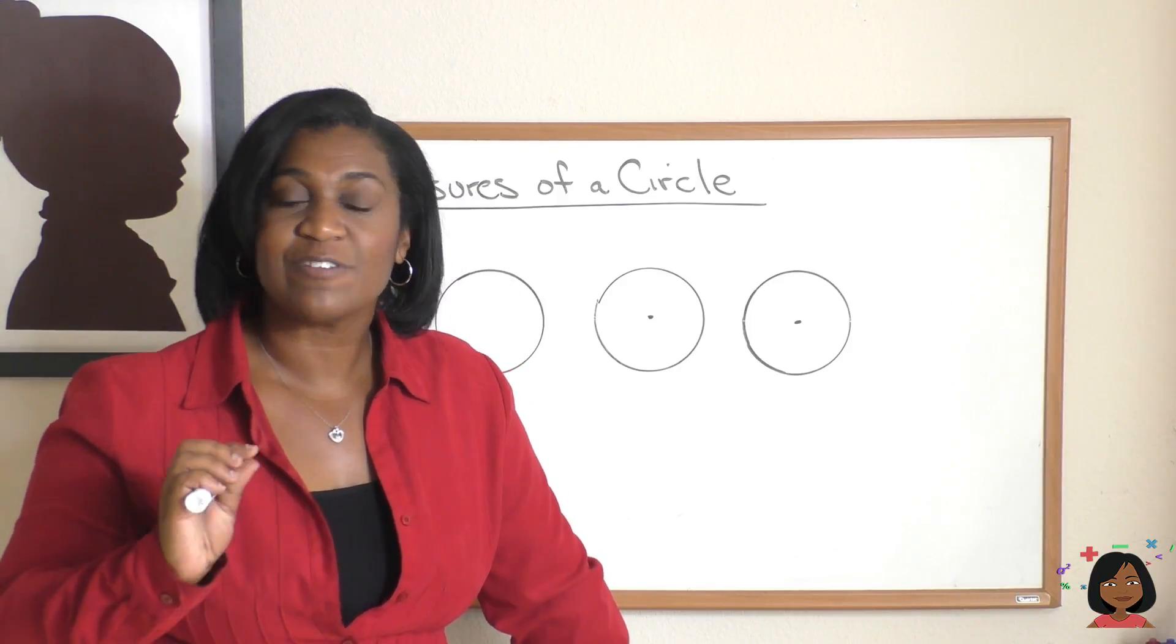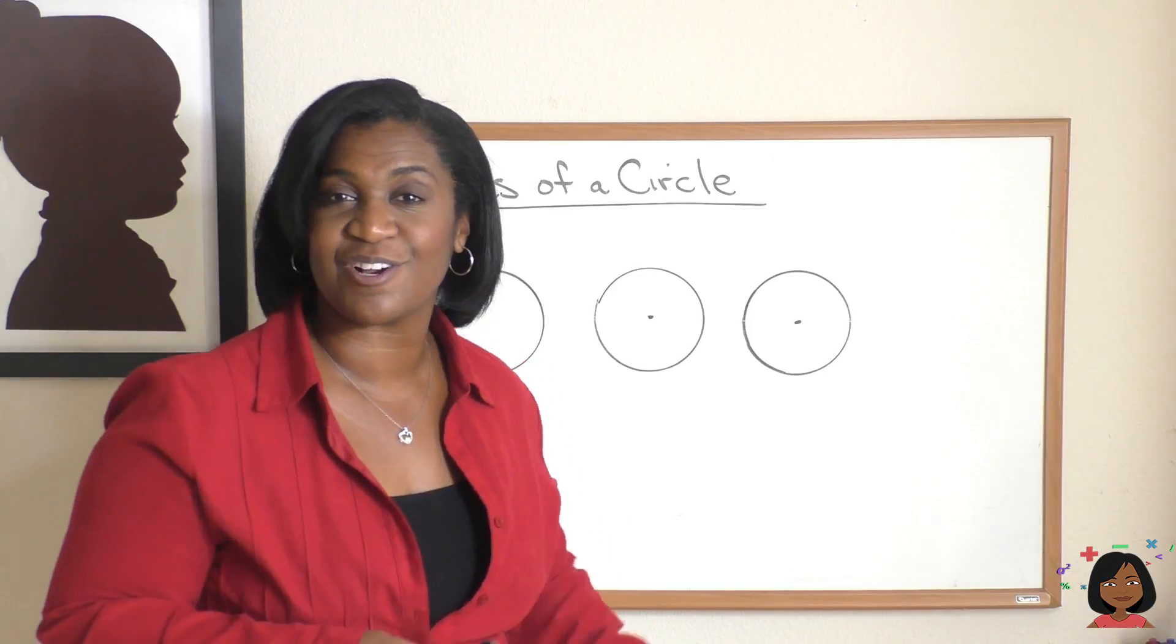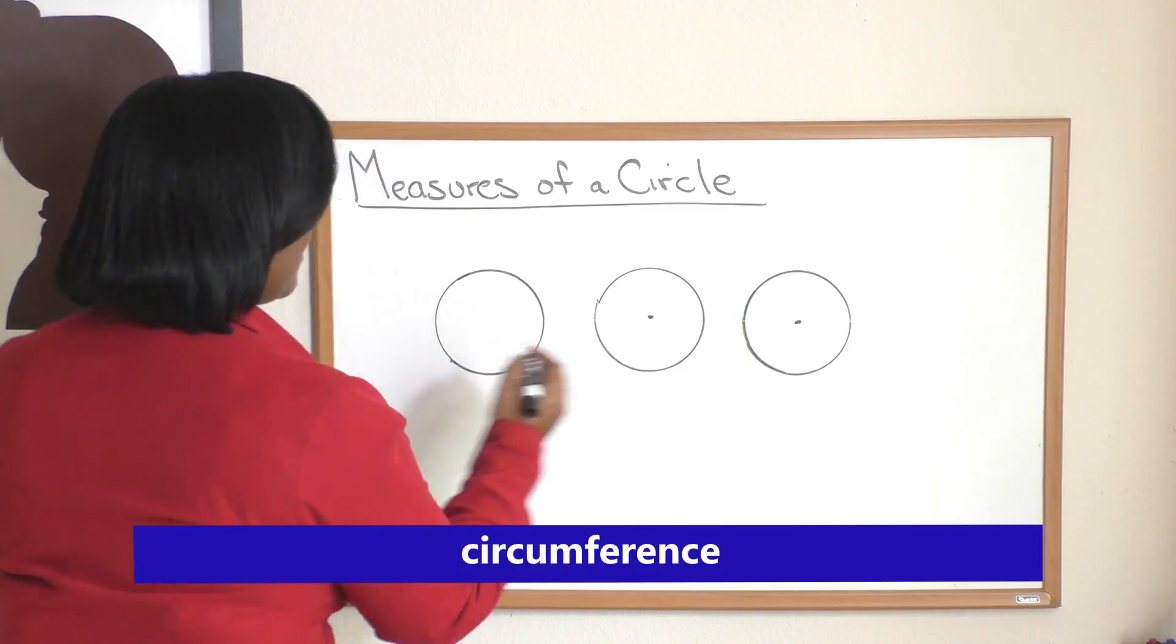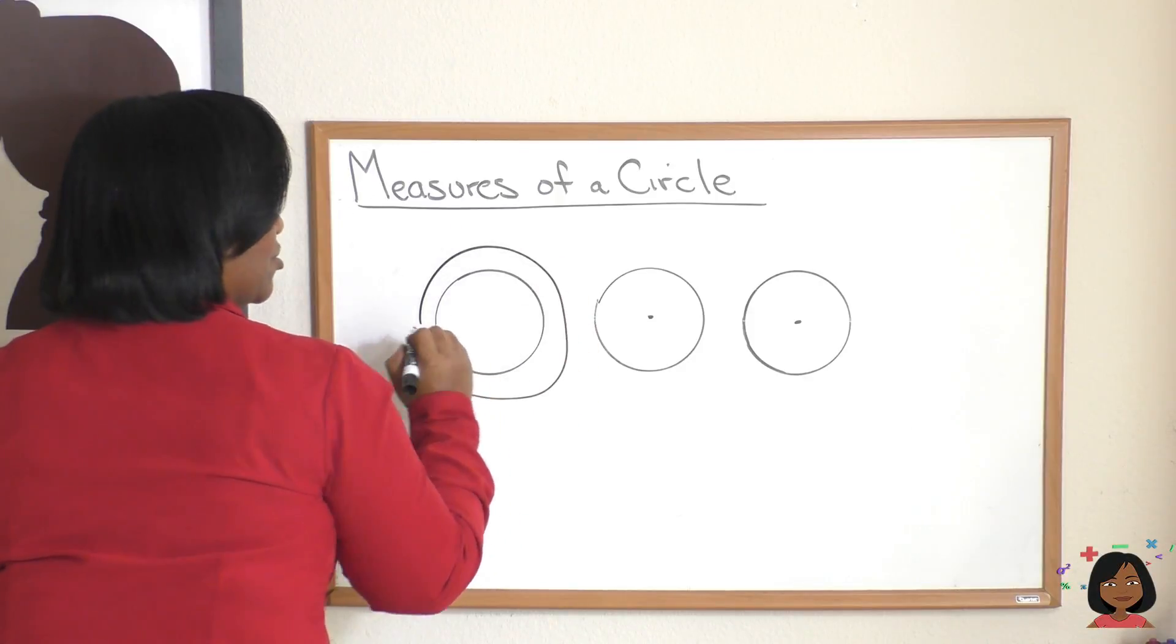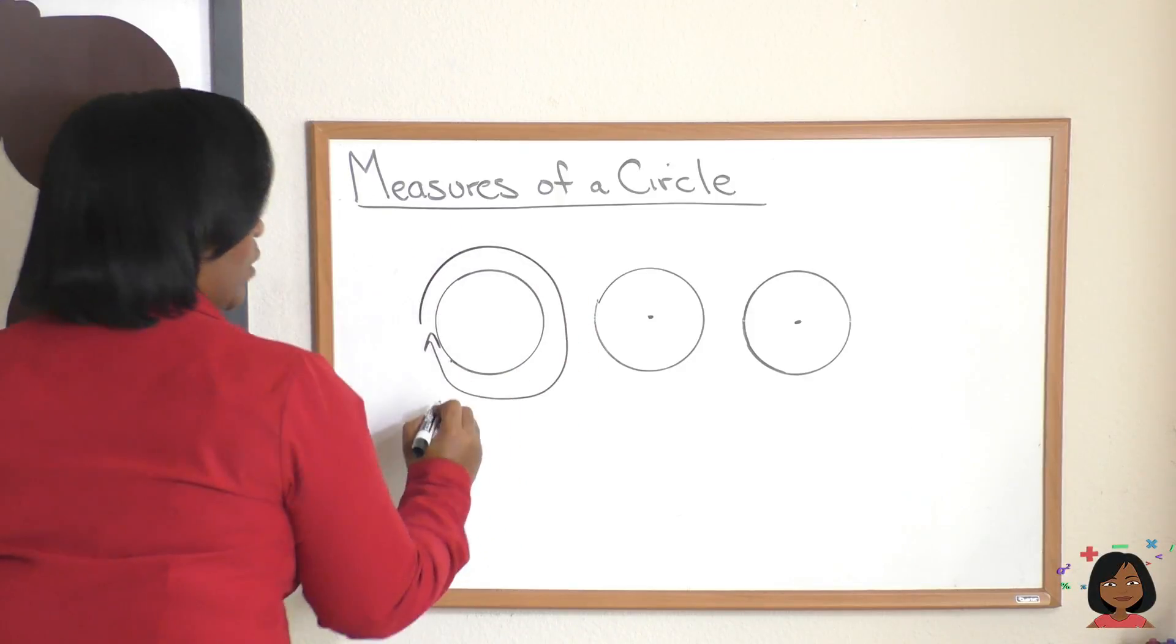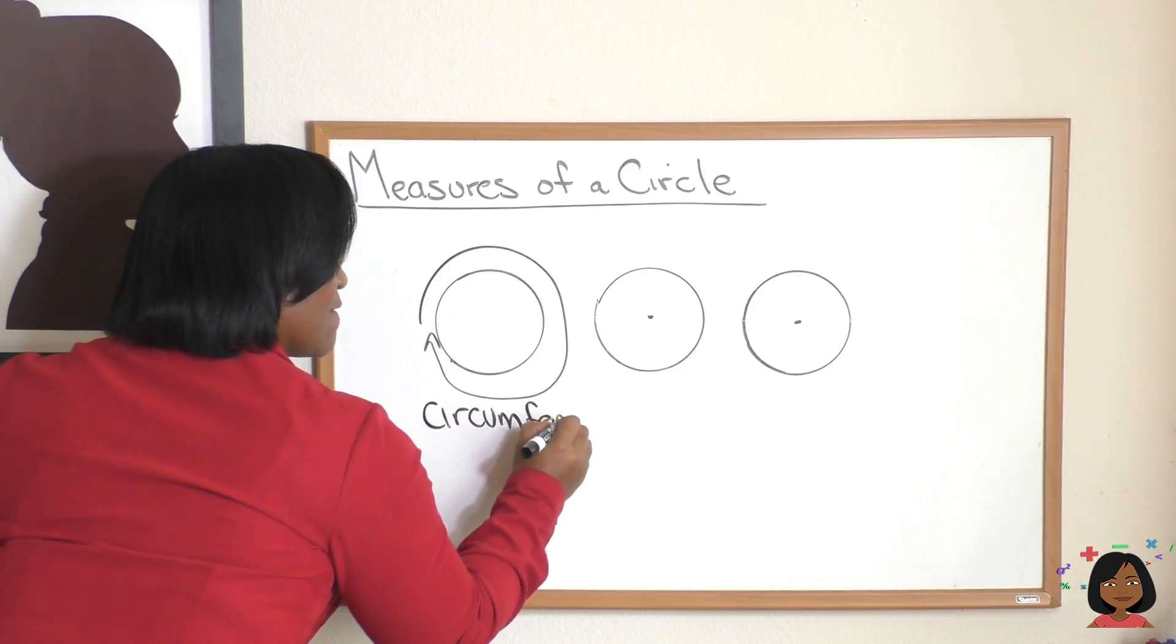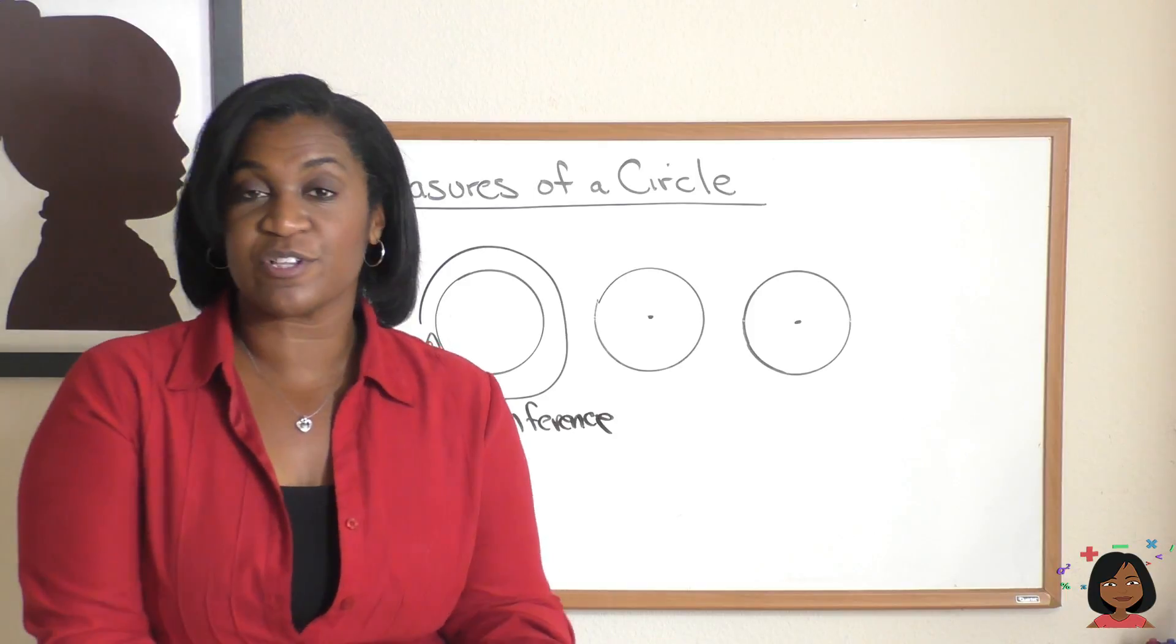Well, we have a special term for that when we measure the distance around the outside of a circle, and that term is called circumference. Let's say we want to go all the way and measure this circle, we would call this circumference. Special name just for a circle's perimeter.